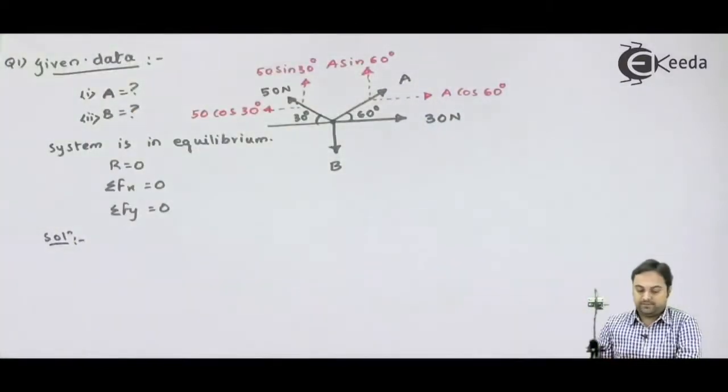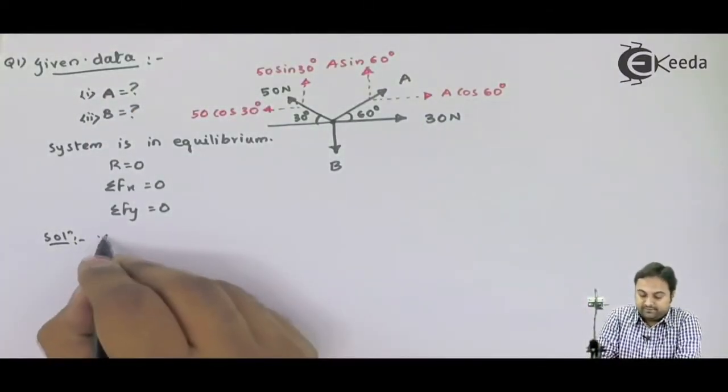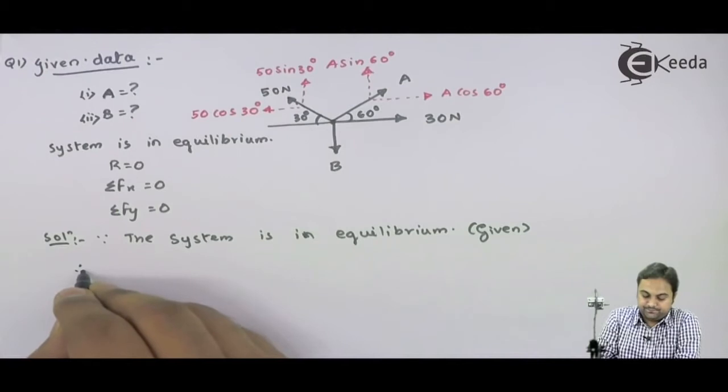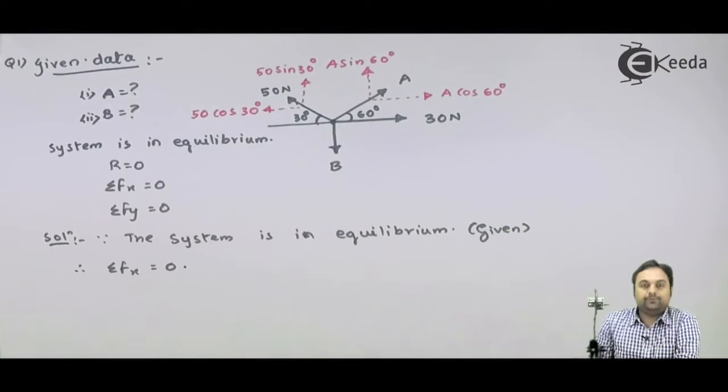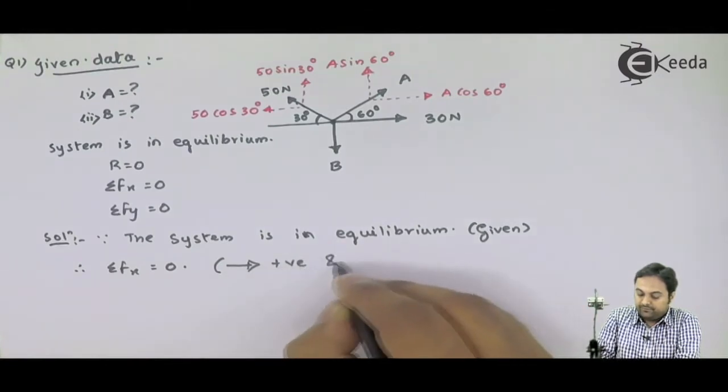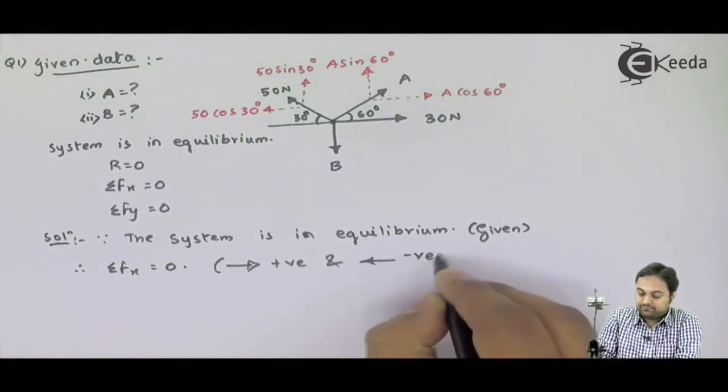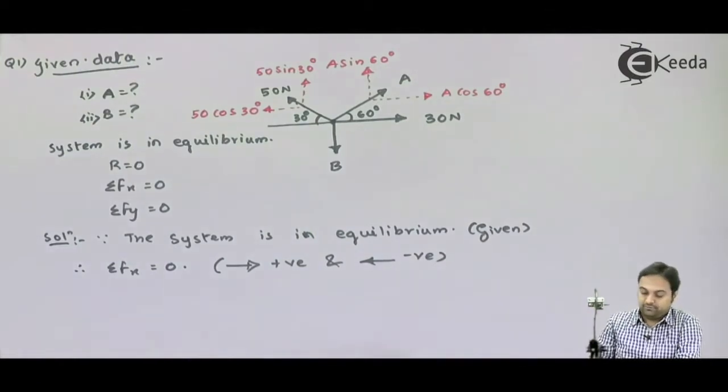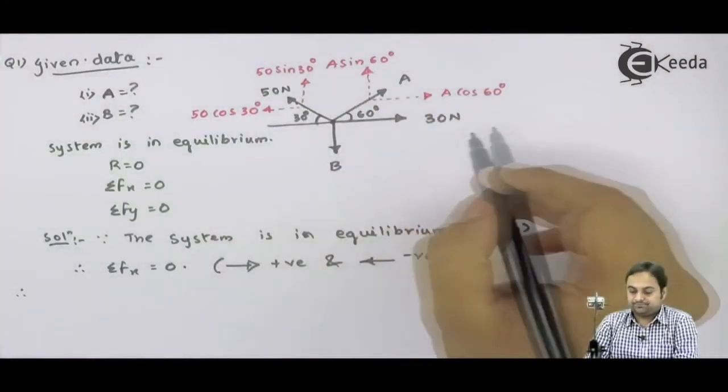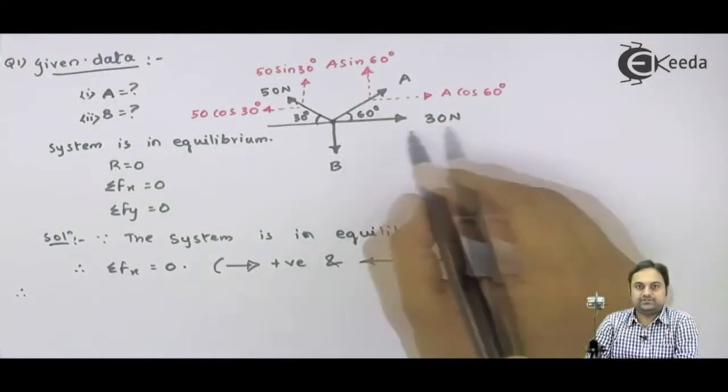Now I will start the solution by saying that since the system is in equilibrium, therefore I will say that summation of all horizontal forces are 0. Hence my convention will be all rightward forces positive and all leftward forces negative. From this I can say that therefore if I look at this diagram, 30 Newton is acting towards right so positive.